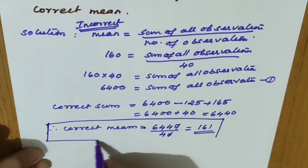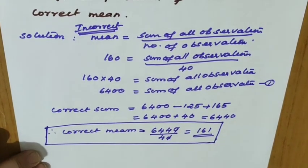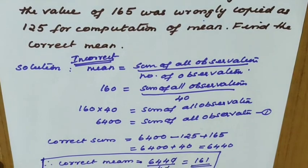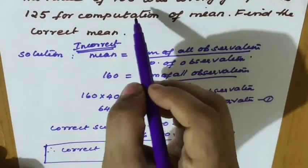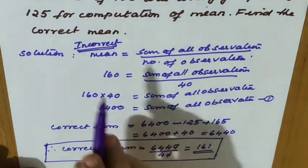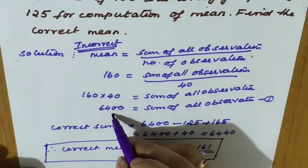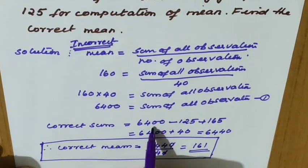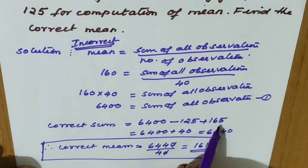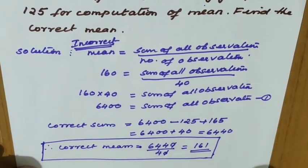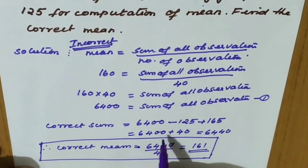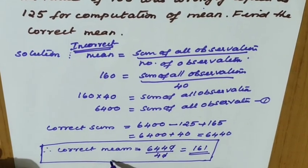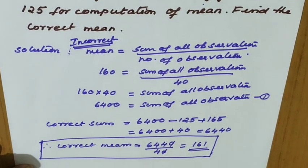This is an important type of question often seen in Olympiad papers. The mean of 40 observations is 160, so the incorrect sum is 6400. After subtracting the wrong value 125 and adding the correct value 165, the correct sum becomes 6440. The number of observations remains 40, so the correct mean is 6440 divided by 40, which equals 161.